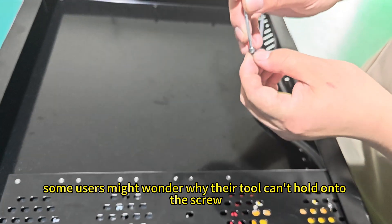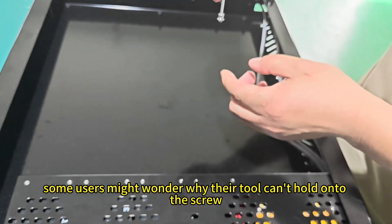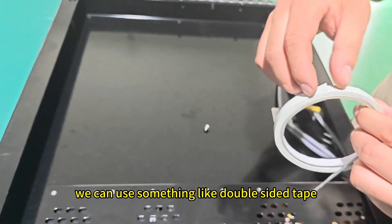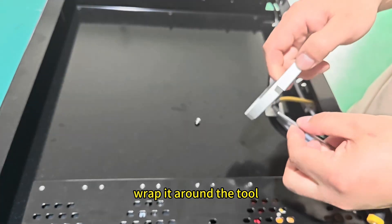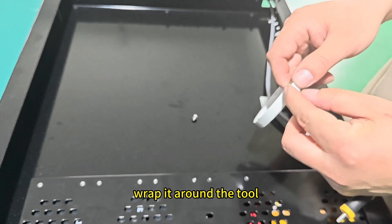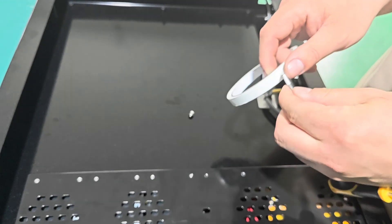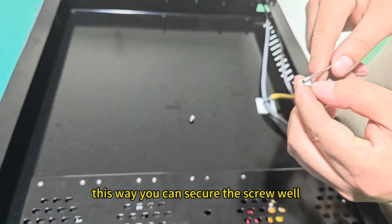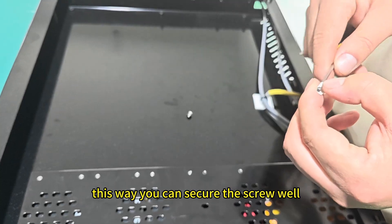Some users might wonder why their tool can't hold on to the screw. We can use something like double-sided tape. Wrap it around the tool. This way, you can secure the screw well.